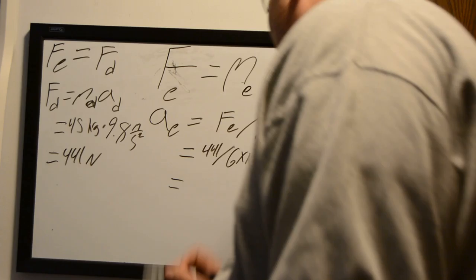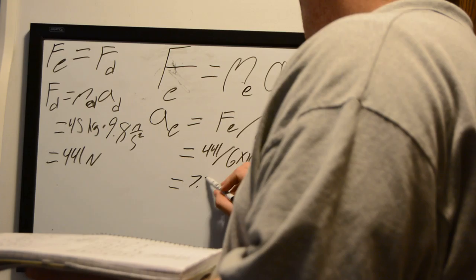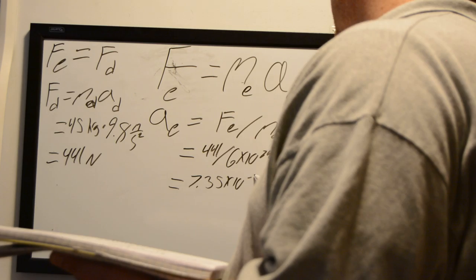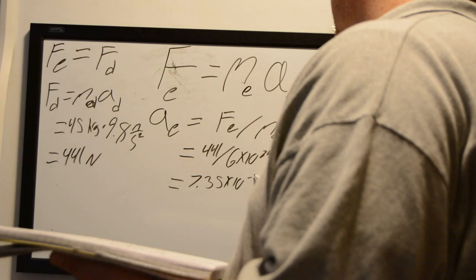And when we divide that through, that gives us that the acceleration of the earth is 7.35 times 10 to the negative 23rd meters per second squared. So it's really a very minuscule acceleration of the earth towards the diver.